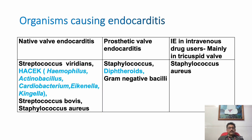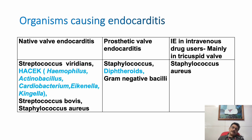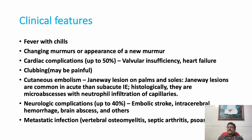Common organisms for normal valve endocarditis include Streptococcus viridans and HACEK organisms — Haemophilus, Actinobacillus, Cardiobacterium, Eikenella, Kingella — as well as Streptococcus bovis and Staphylococcus aureus. For prosthetic valves, Staphylococcus aureus, MRSA, diphtheroids, and gram-negative bacilli are common. In IV drug abusers, right-sided tricuspid valve endocarditis is mainly caused by Staphylococcus aureus and MRSA.